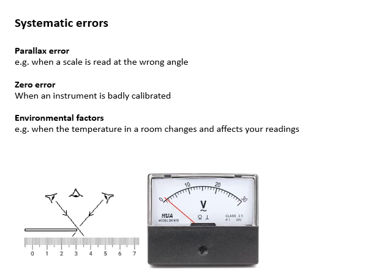Some examples of systematic errors: parallax error, if you read a scale at the wrong angle. If you look at it from sideways it says 0.54, if you look at it dead on it says 0.52. If you're measuring the height that a ball bounces, your eye level should be in line with the ball and the ruler that you're using to measure the height.